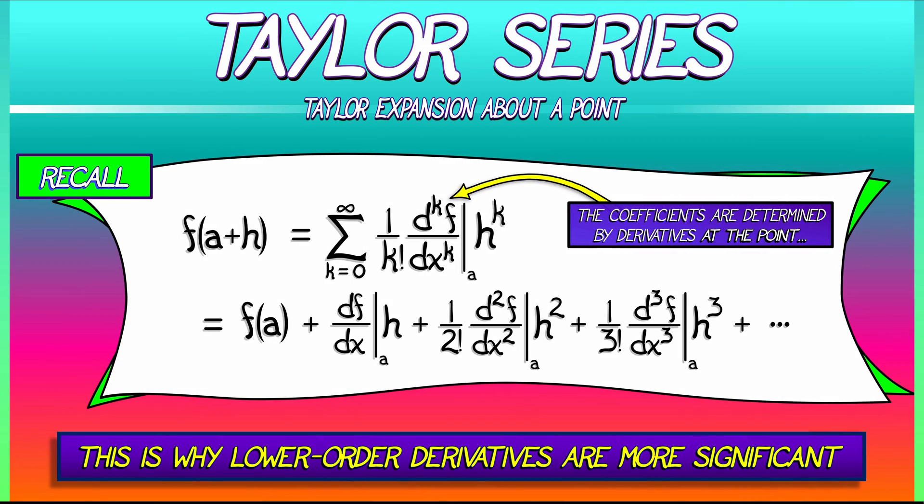But this is why the lower order derivatives are the most significant, why they dominate in the polynomial approximation, and this is why it's the low order derivatives that you have the best physical intuition for. Now, I want you to take a careful look at this formula for Taylor expansion. You know this formula, of course. You've gotten used to it.